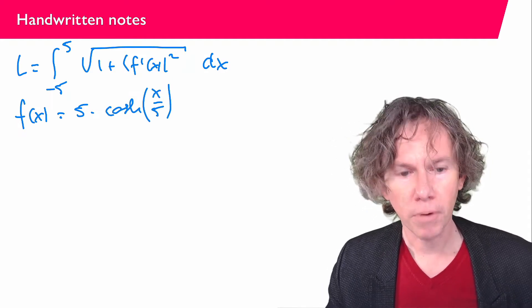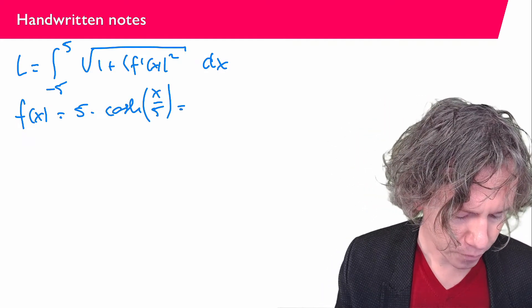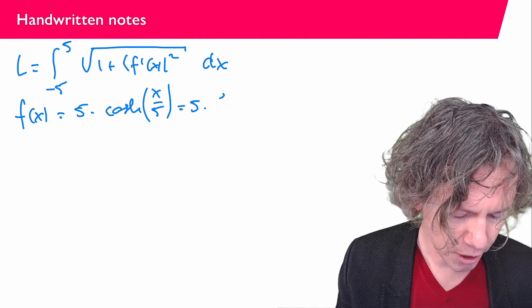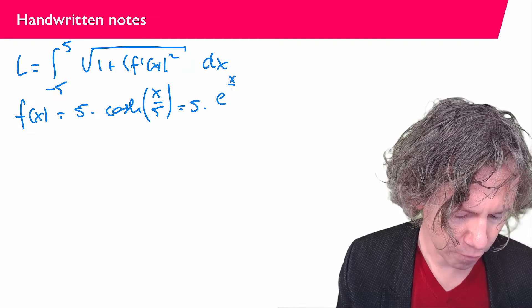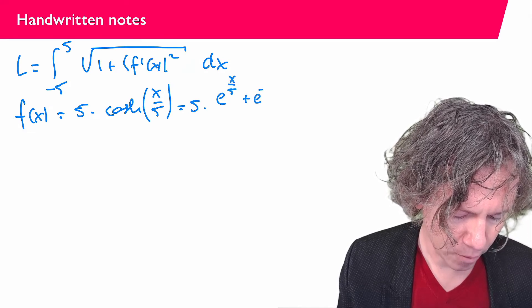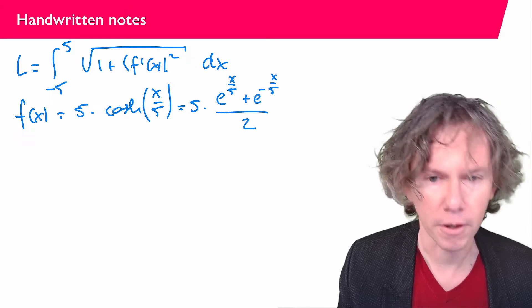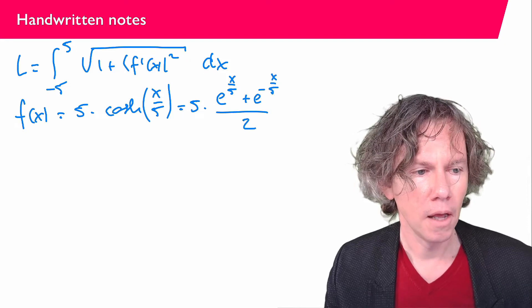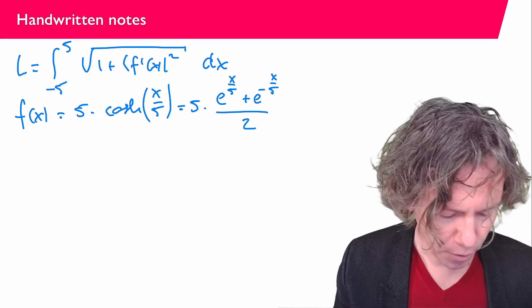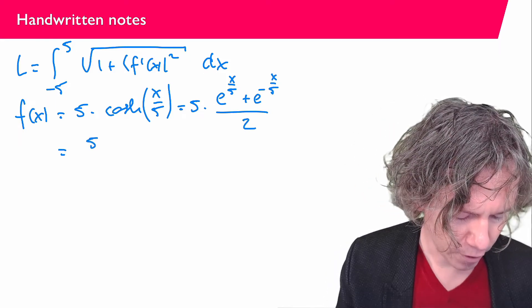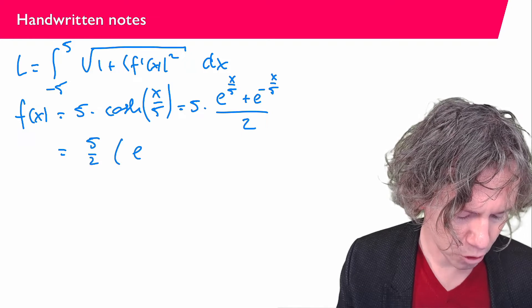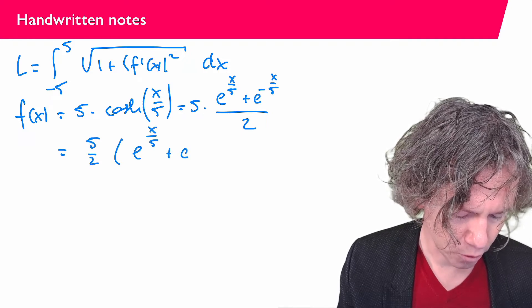Which is, by definition, 5 times e to the power x over 5 plus e to the power minus x over 5, the whole thing divided by 2. Let me rewrite it as 5 over 2 times exponential plus exponential.